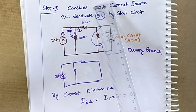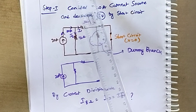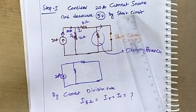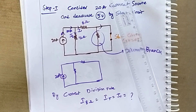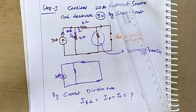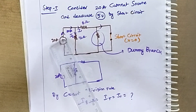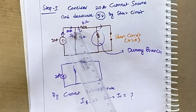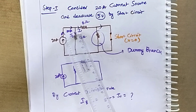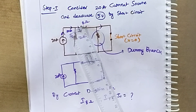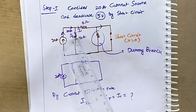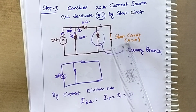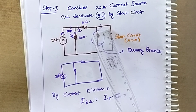Step one: consider the 20 amp current source active and deactivate the 5 volt voltage source by short circuit, since in short circuit voltage is zero. Redrawing the circuit, 20 amps flows up to the junction where it divides through the 8 ohm and 12 ohm branches. We need to calculate i1, the current through the 8 ohm resistance. The 5 volt source is replaced by a short circuit, so V equals zero.